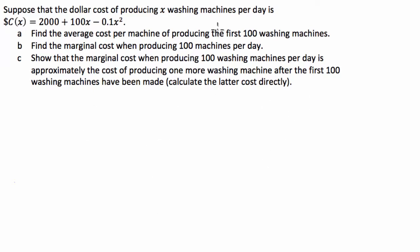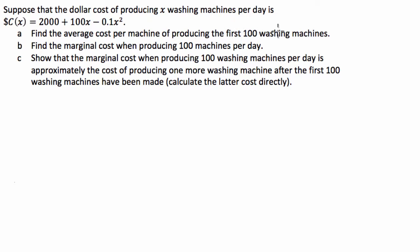G'day guys, I've got an applications of calculus question for you today. We've got a company that makes x washing machines per day. The cost to them of producing these washing machines is 2,000 plus 100x minus 0.1x squared. We're asked to do three things. The first being that we've got to find the average cost per machine of producing the first 100 washing machines.